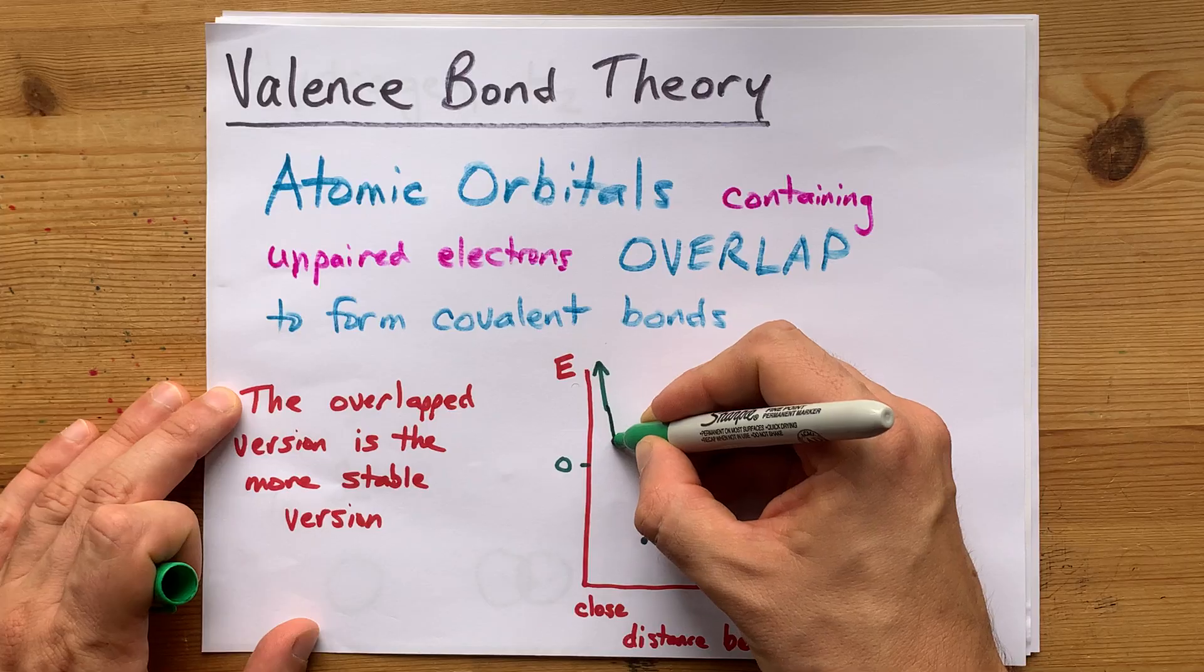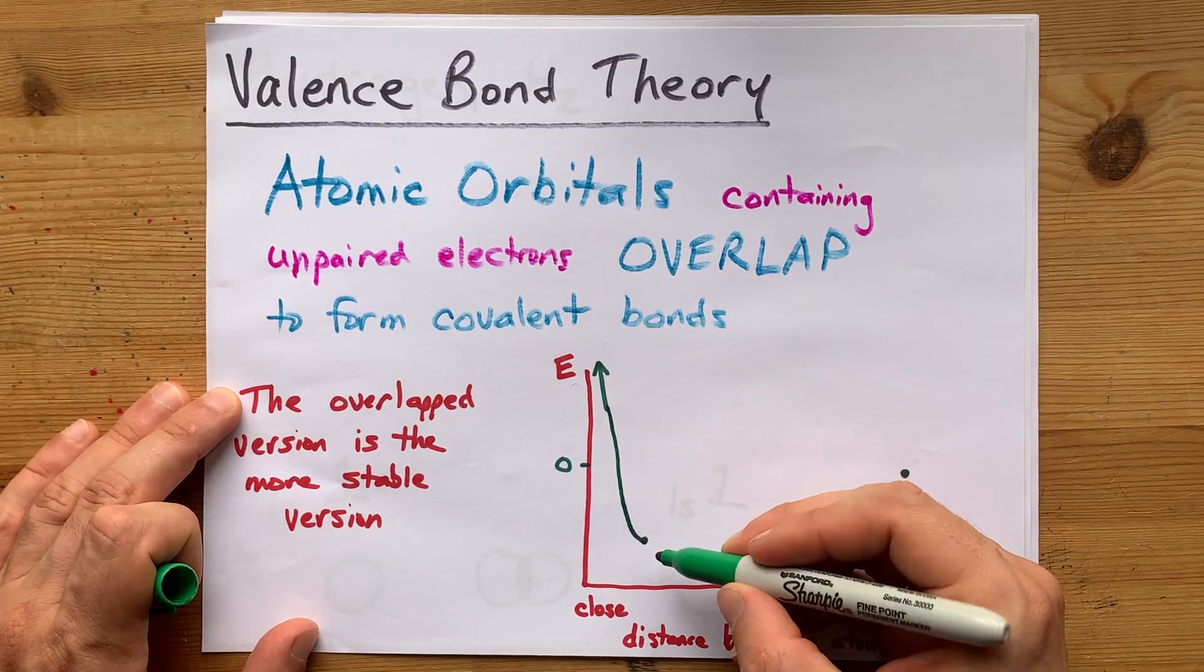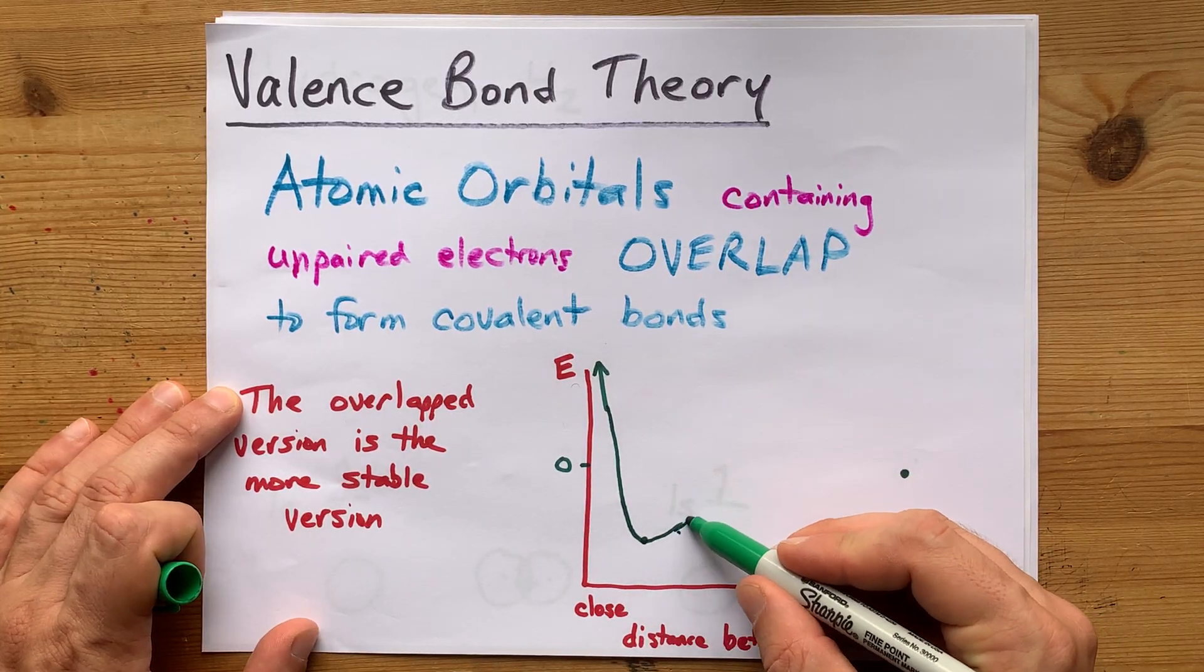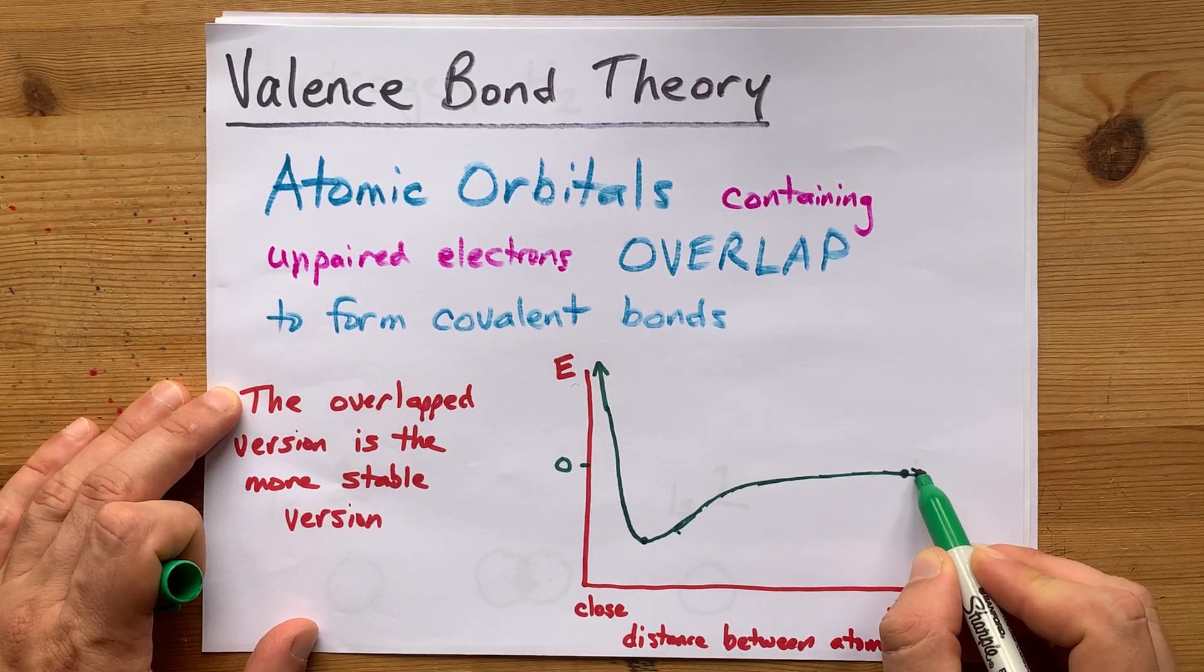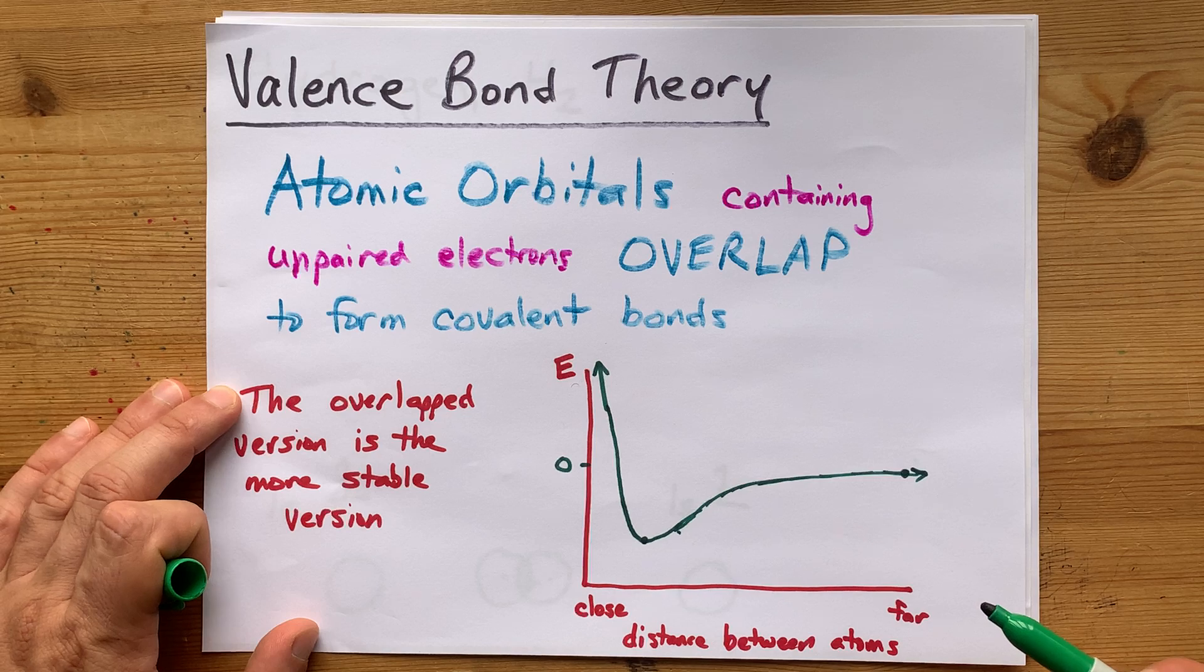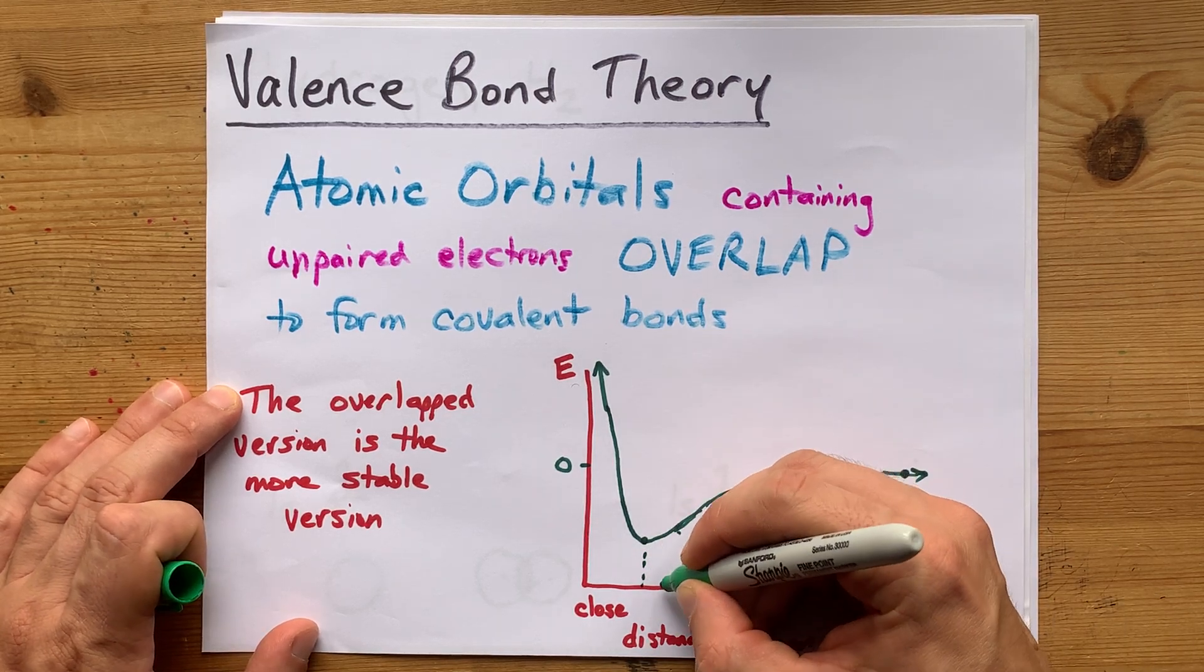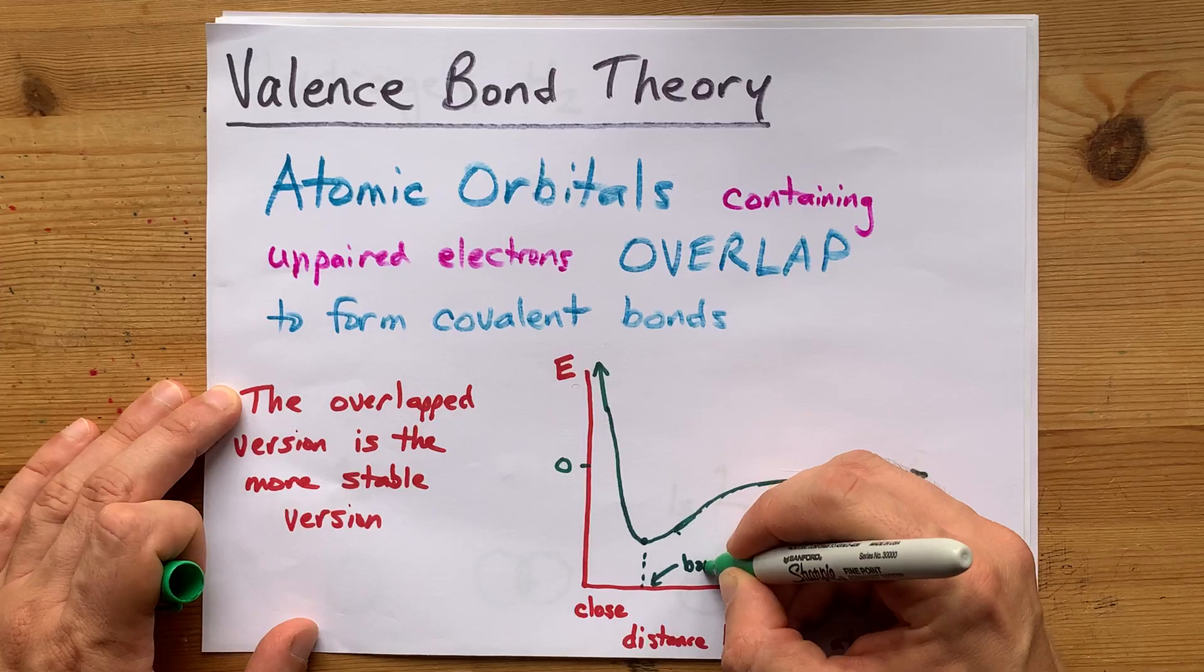Now, it goes to infinity if they get too close, and it goes up towards zero as they get farther and farther apart. Now, I suppose I should make that an asymptote at zero. And this here represents the bond length.